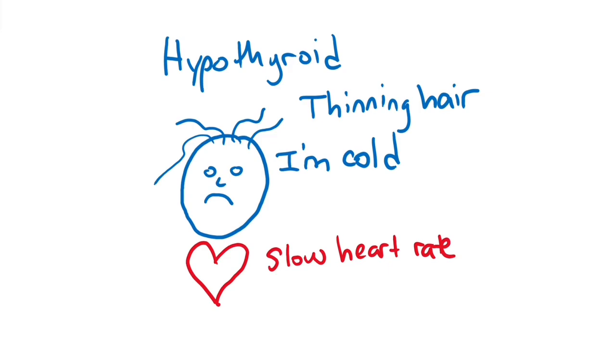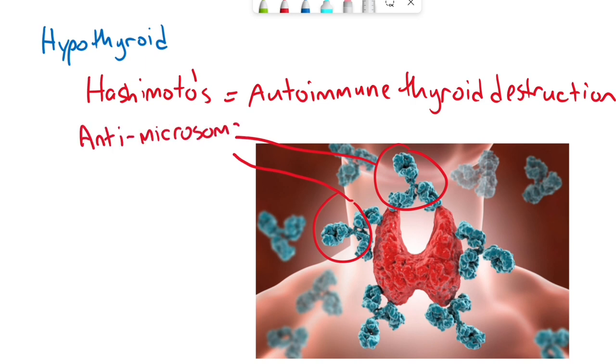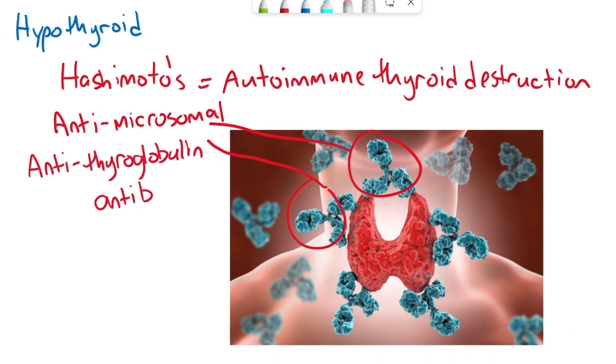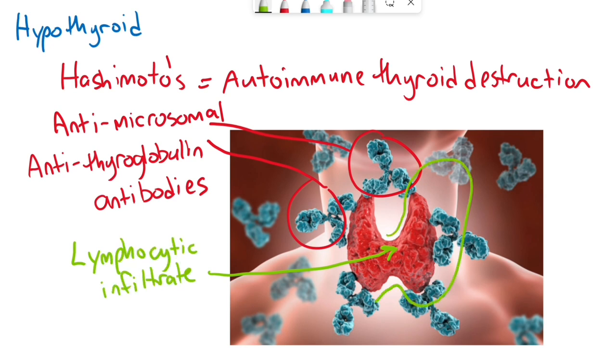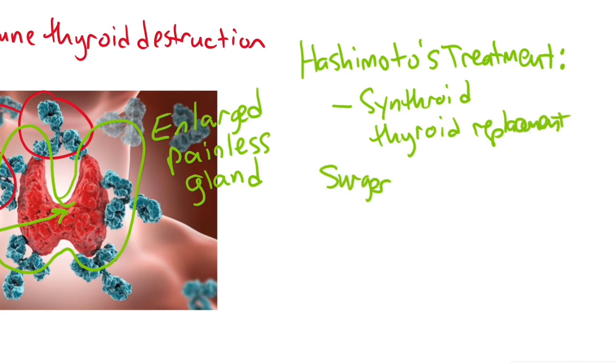This can be caused by Hashimoto's disease which is autoimmune destruction of the thyroid from antimicrosomal and antithyroglobulin antibodies. Usually the thyroid shows lymphocytic infiltrate on path and causes an enlarged painless gland. Hashimoto's is usually treated with thyroid replacement with synthroid or thyroxine. Surgery is usually only indicated if compressive symptoms or for concomitant suspicious nodules.